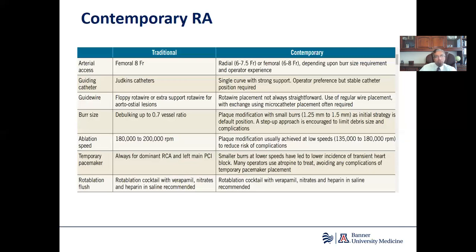Temporary pacemaker was always used for dominant right coronaries in the past. However, using smaller burrs at lower speeds, the incidence of heart block has decreased. We can use atropine to pre-treat if heart block is expected, or use aminophylline, or sometimes use the pacer wire with the roto wire as the pacing wire if urgent pacing is needed. The roto ablation flush cocktail hasn't changed — we use some form of vasodilator, nitrates, and heparin to combat vasospasm and slow flow, flushed through the roto system.